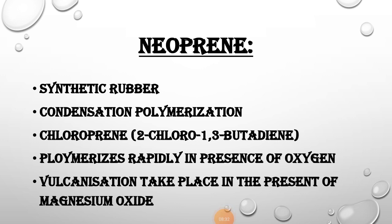The next polymer is neoprene. Neoprene is a synthetic rubber obtained by addition polymerization, where monomers link together without liberation of any small molecule. The monomer is chloroprene — 2-chloro-1,3-butadiene. Chloroprene polymerizes rapidly in the presence of oxygen. The vulcanization of neoprene takes place in the presence of magnesium oxide.